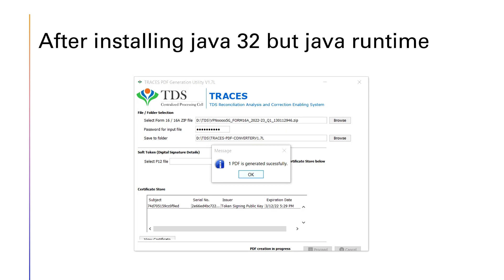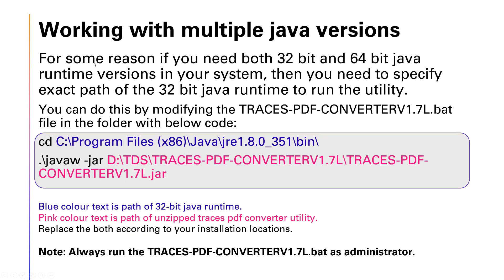If multiple Java versions are installed in your system, you may still face the issue, because by default the system uses the 64-bit Java version. If you need both 32-bit and 64-bit Java runtimes in your system, then you need to specify the exact path of the 32-bit Java runtime to run the utility.